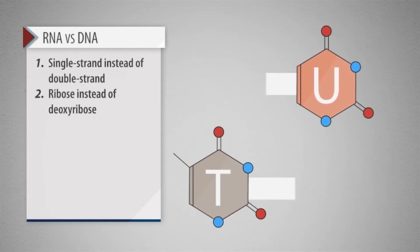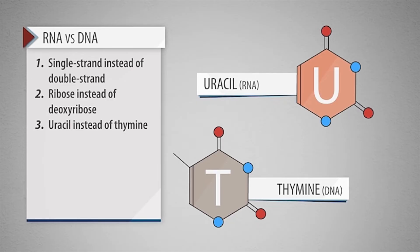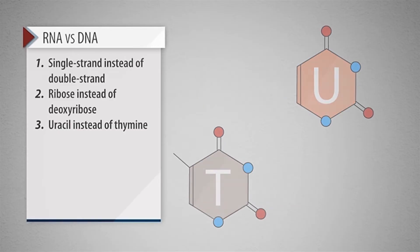Lastly, RNA has a uracil nitrogen base instead of thymine, allowing the base pair complementary rule. Adenine binds to uracil, and cytosine binds to guanine.